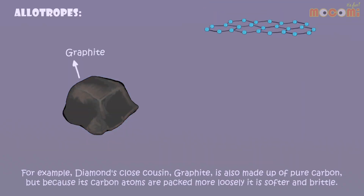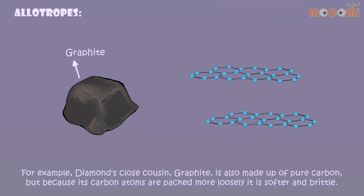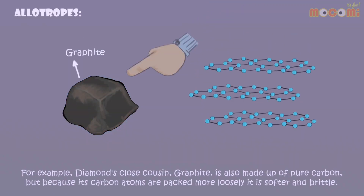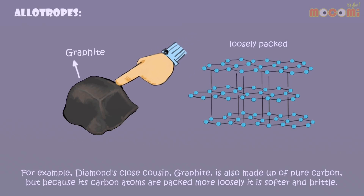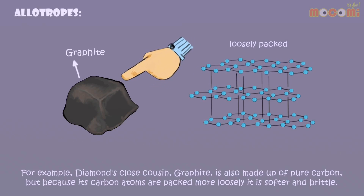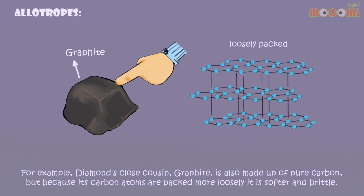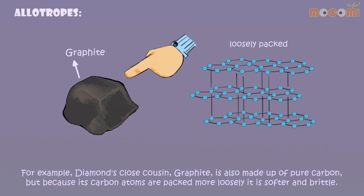For example, diamond's close cousin graphite is also made up of pure carbon. But because its carbon atoms are packed more loosely, it is softer and brittle.